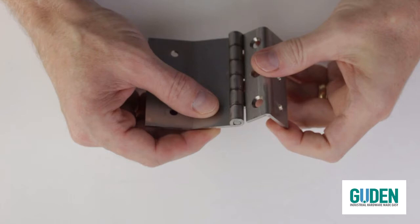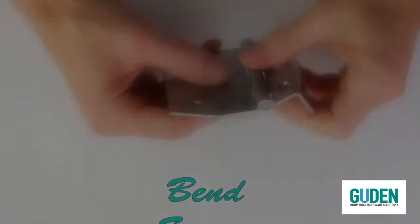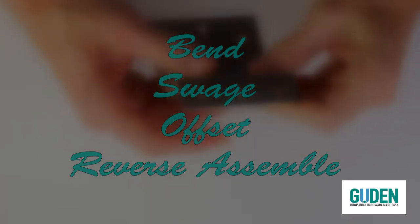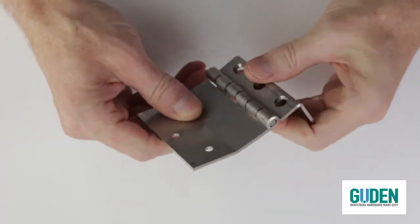Gudin can do many operations on hinges. In this video, we'll talk about bend, swedge, offset, and reverse assemble. These are all common operations we can do to hinges for a custom order.